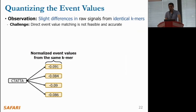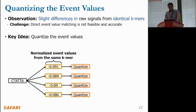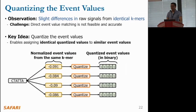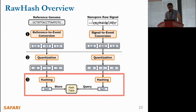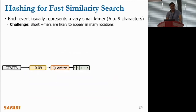The key observation is that identical k-mers generate slightly different raw signals. This presents a challenge, as we cannot directly match event values to each other since it would be inaccurate due to variations. The key idea to overcome this challenge is to quantize the event values, which enables us to assign the same quantized value to similar event values.